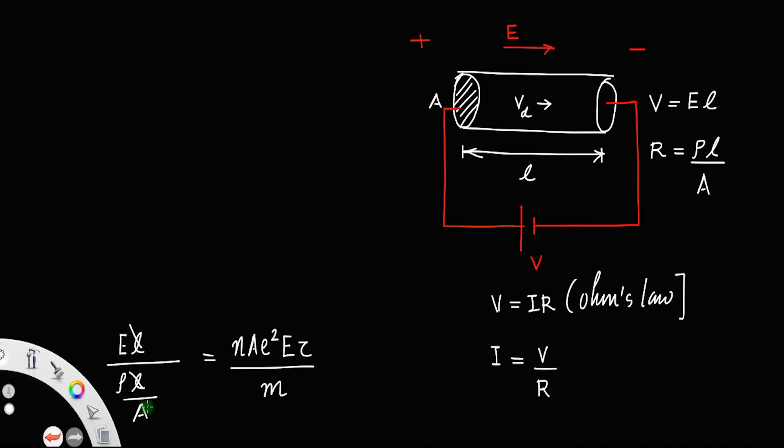This A will go up. So this will be EA divided by ρ is equal to nAe²Eτ divided by m. Cancel this E, also this E, this A you can cancel also.